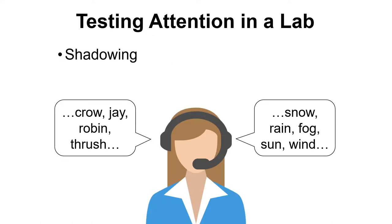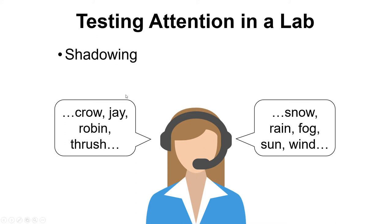One way we can test attention in a lab is a process called shadowing, or more technically a dichotic listening task. A person sits with headphones on — one side plays one particular message, the other side plays another. The task is to repeat what is playing on one side while ignoring the other. People are really good at repeating back what they hear on one side and blocking out the other, but they have a lot more trouble remembering what was on the other side because they weren't actively attending to it.